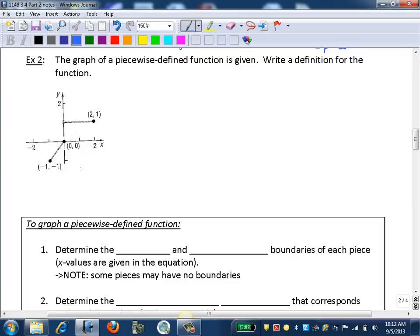We need for each piece, which we can see from the graph, there's two clearly defined pieces. For each piece, you need to find the boundaries and the equation.